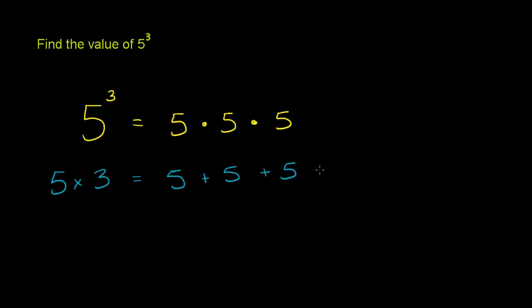So 5 times 3, you've seen that before, that's 15. But 5 to the third power, 5 times itself 3 times is equal to, 5 times 5 is 25, and then 25 times 5 is 125. So this is equal to 125. And we're done.